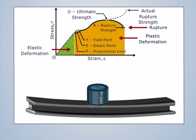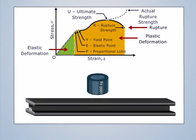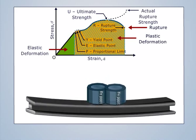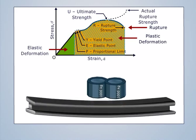In the Elastic Deformation Zone, the material returns to its original dimensions upon releasing the applied load. In the Plastic Deformation Zone, the material endures some permanent deformation that remains even after releasing the load.